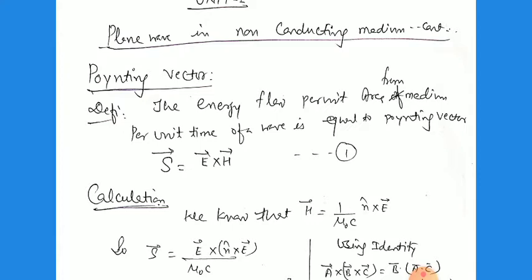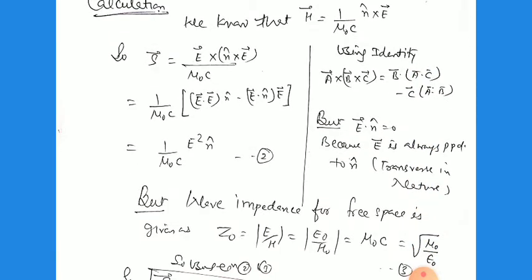Now, to calculate the Poynting vector for the non-conducting medium, we can calculate it from H. H is equal to 1 divided by μ₀c multiplied by n̂ cross E, where n̂ is the direction of propagation, which is perpendicular to the electric field as well as H, and c is the velocity of light. μ₀ is the permeability of the medium. So the Poynting vector S = E cross (n̂ cross E) divided by μ₀c.